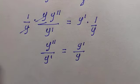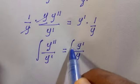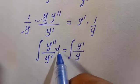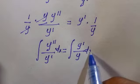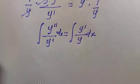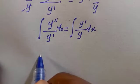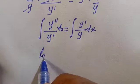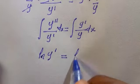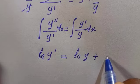The next step is to introduce integration on both sides, integrating with respect to x. On the left-hand side, integrating y''/y' gives ln(y'), and on the right-hand side, integrating y'/y gives ln(y) plus a constant c.